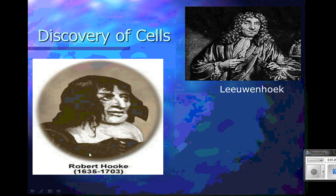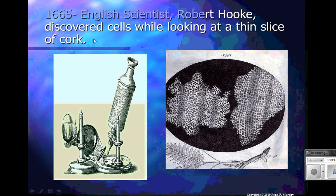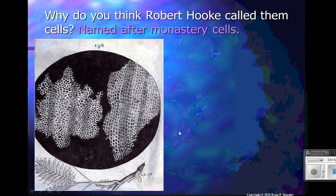The two gentlemen responsible for the discovery of cells are Robert Hooke, who we saw in our video earlier, and Leeuwenhoek. In 1665, the English scientist Robert Hooke discovered cells while looking at a thin slice of cork. This is what he saw, and this is what we saw him drawing in the video earlier today. He called them cells because they reminded him of monastery cells.